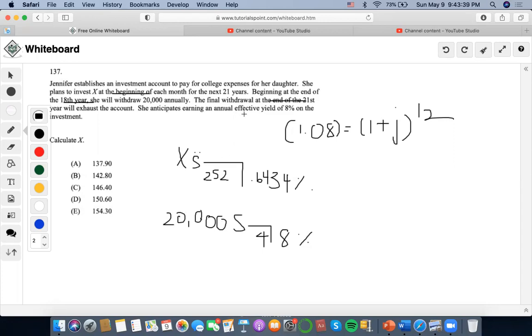Once she withdraws this amount by the 21st year, she exhausts the account. So we need to calculate X given that the account is exhausted, meaning the deposit amount must equal the withdrawal amount.